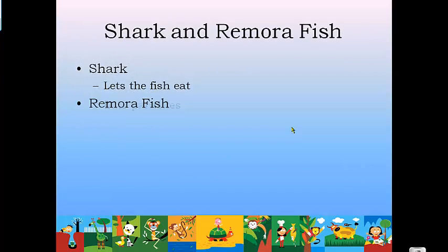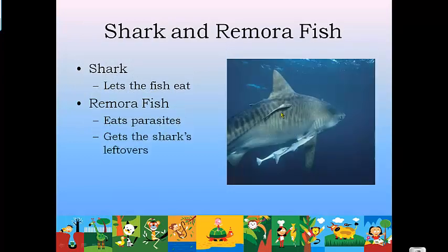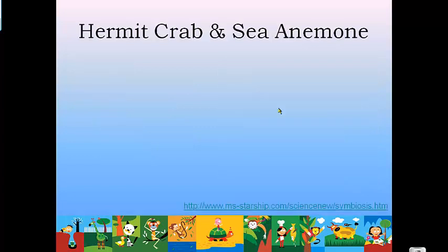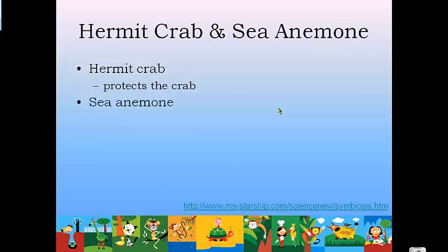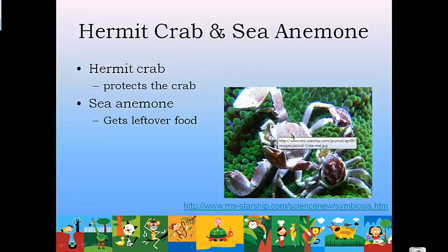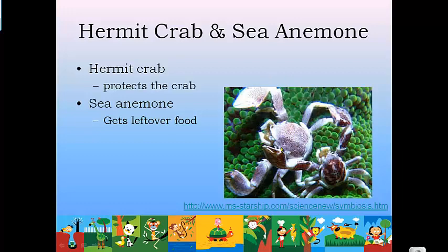The shark and the remora fish is another mutualism. The shark lets the remora fish stay on it because the remora fish eat the parasites on the shark's skin. The remora get a free ride and free food; in return the shark lets them live and gets all the parasites eaten. The remora also gets the shark's leftovers. Another example: the hermit crab and the sea anemone. The hermit crab benefits by eating leftover food from the sea anemone, and the sea anemone benefits because the hermit crab protects it from predators.